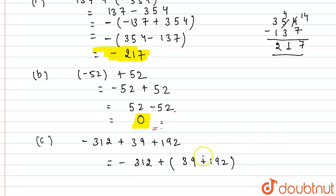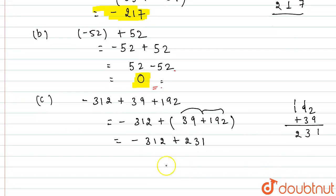That is 192 plus 39. So 9 and 2 is 11, 9 plus 3 plus 1 will become 13, and 1 plus 1 will become 2. So this will become minus 312 plus 231. Now again you can see that this minus sign is with bigger number. So what we'll do is, taking minus common, I'll take minus common so it will become 312 minus 231.